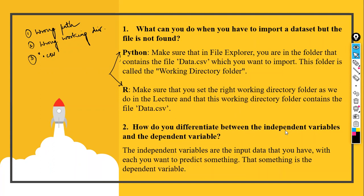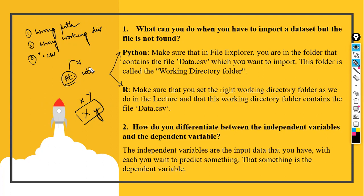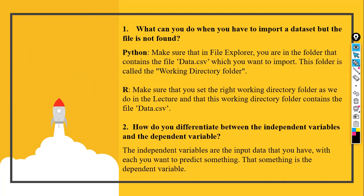How would you differentiate between independent and dependent variables? Independent and dependent variables are represented as small x and capital Y, or capital X and small y. The independent variables are input data based on which you want to predict something, and that something is the dependent variable. For example, if I have height and weight, based on a person's height I would be able to predict their weight — as height grows with age, weight tends to grow too. This is how we identify the difference between independent and dependent variables.